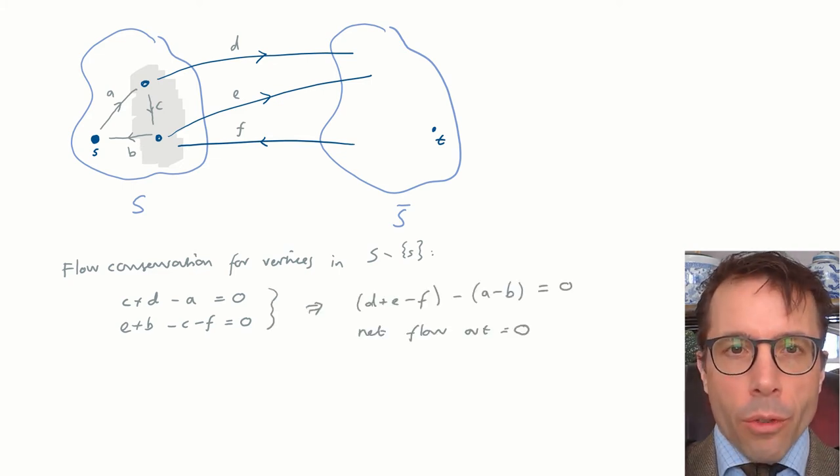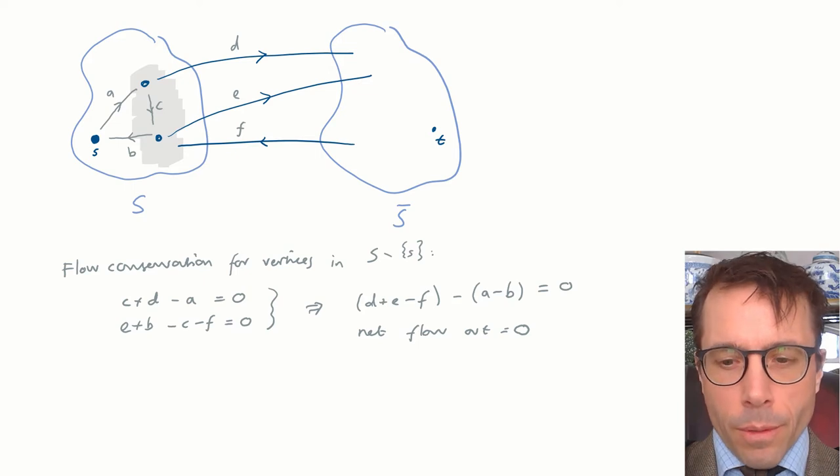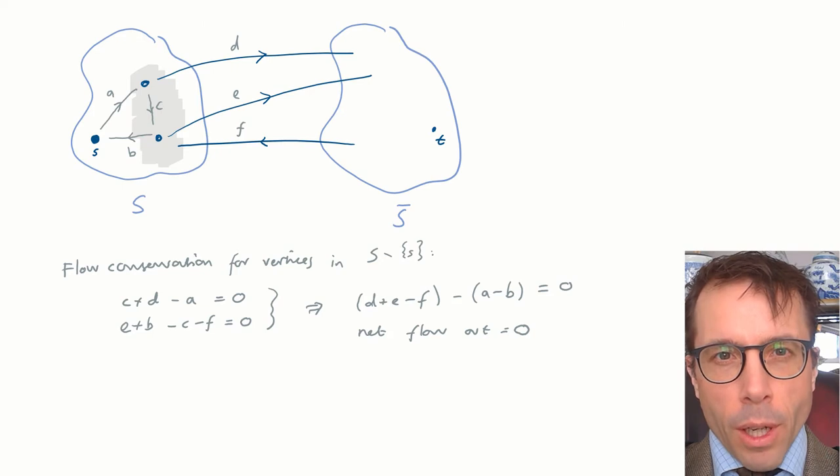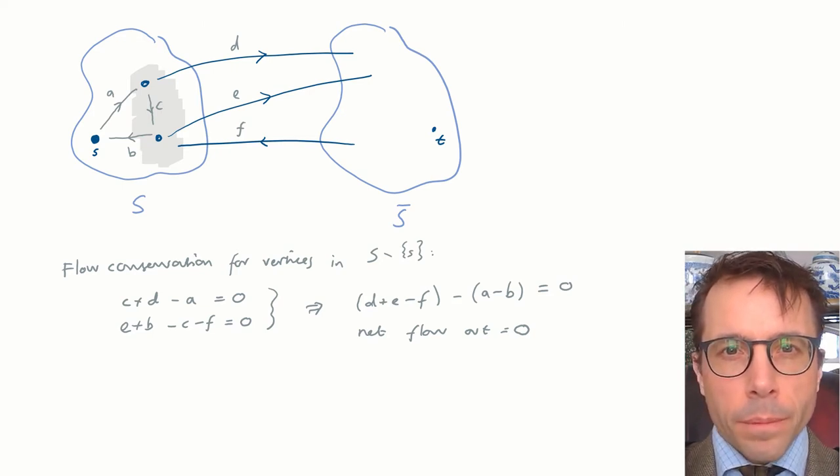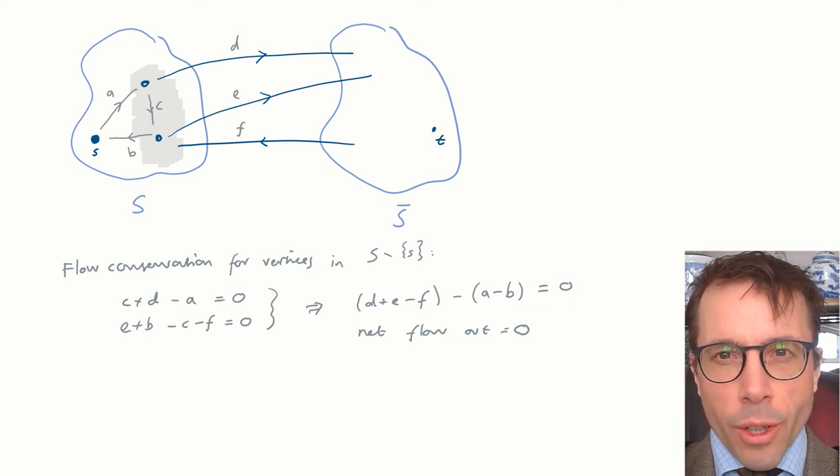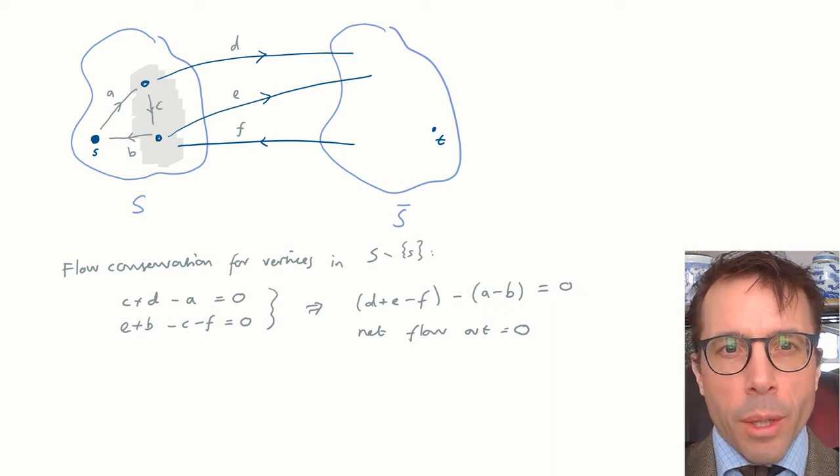Now, I'm just going to add those two equations together. The C term cancels out, and what we're left with can be written like this. This equation says that the net amount of flow out of these shaded vertices, in other words, the net amount going towards S-bar minus the net amount coming in from the source, is equal to zero. In other words, what we've got here is an equation that relates the net flow leaving the source, A minus B, to the net flow crossing the cut, D plus E minus F.